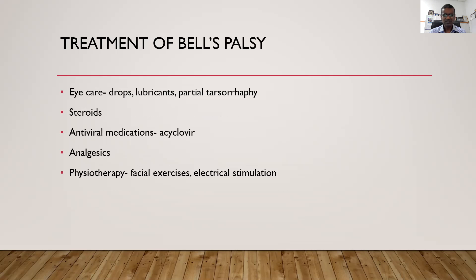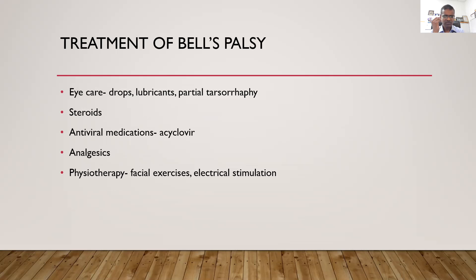Treatment of Bell's Palsy is quite simple and straightforward. One is that we have to protect the eyes, because patients can't close the eye on the affected side, so dust and other things can get in causing irritation and sometimes secondary infection. Frequent eye drops and lubricants can be useful. If a person has totally weakened orbicularis oculi muscles, they can go for partial tarsorrhaphy, where the eyelids are sutured partly, and once the patient recovers it can be opened — though that is rarely required.